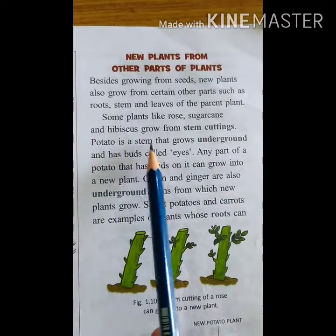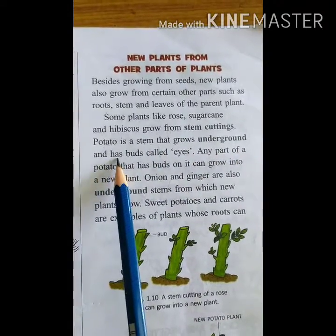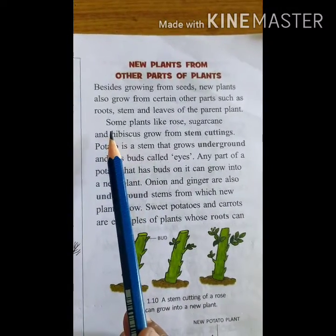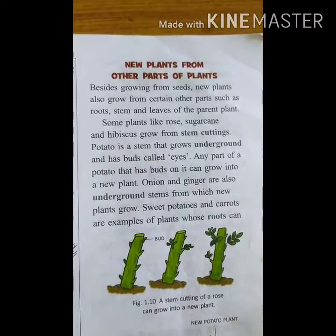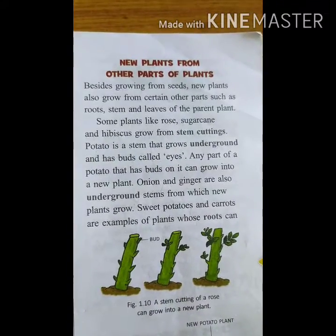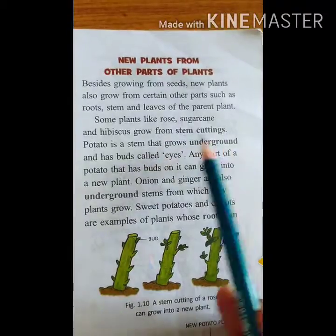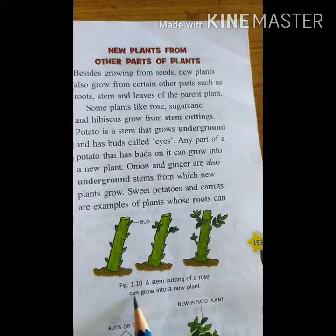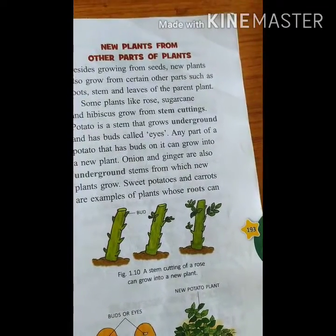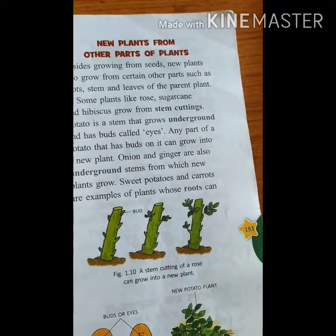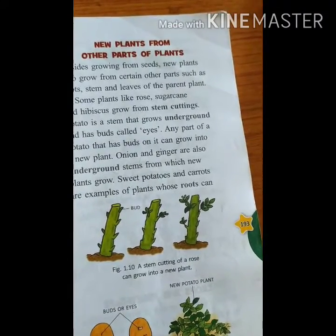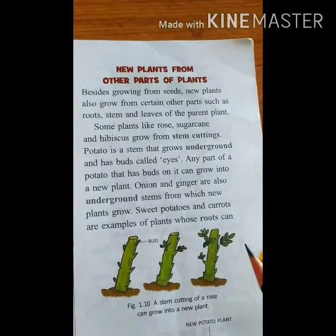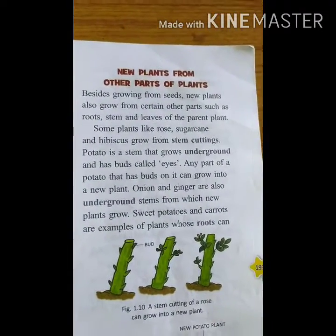Some plants like rose, sugarcane, and hibiscus grow from stem cuttings. You can see a stem cutting of the rose grows into a new plant. If you want a red flower and a yellow flower, you cut and join them with tape, and you can find both colors growing on the same plant.